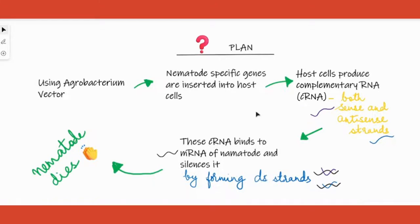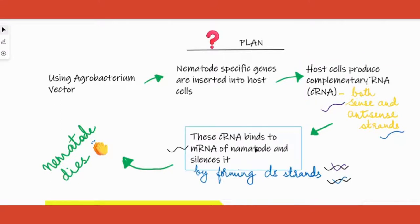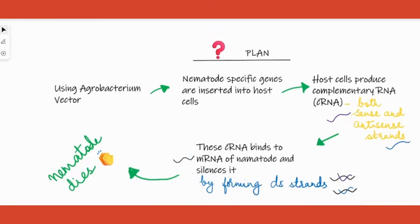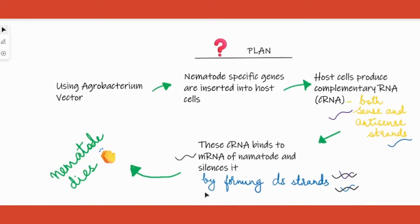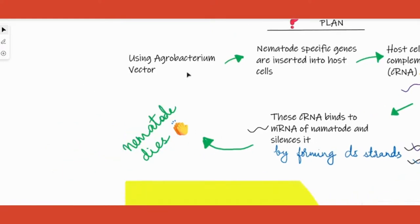Now, the moment the nematode comes and attacks the tobacco plant, this cRNA binds to the mRNA of the nematode and forms double strands. The moment double strands are formed, the mRNA — which is normally a single strand and acts as messenger RNA — becomes silenced. Therefore it doesn't code for any of the proteins required for the nematode to live, resulting in the death of the nematode.